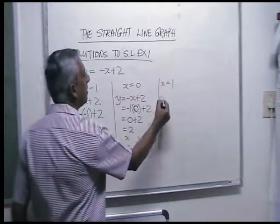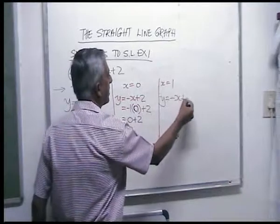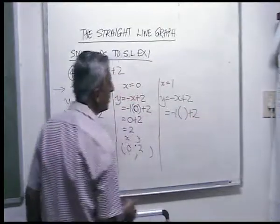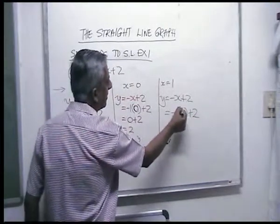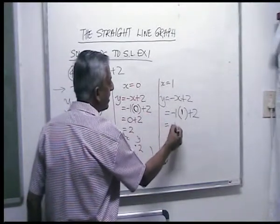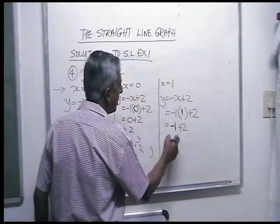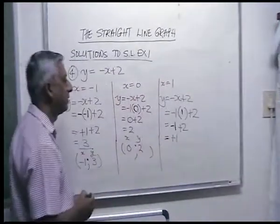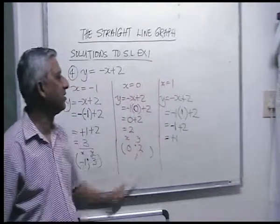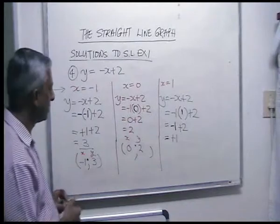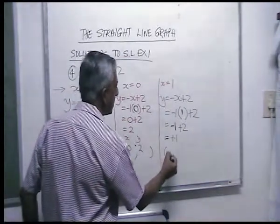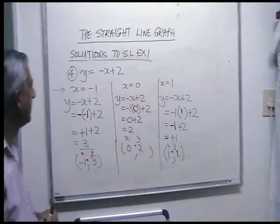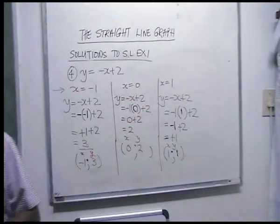For x is one: y is equal to minus x plus two, so minus one times one is minus one, plus two. You owe one and you have two, so you end up with one. Your final answer is one, one — x is one, y is one. That brings us to the end of exercise one.